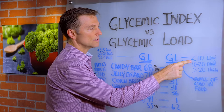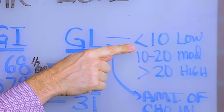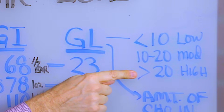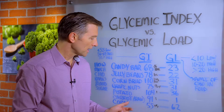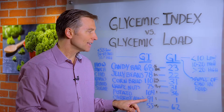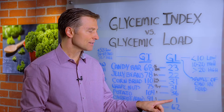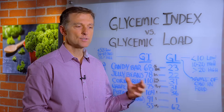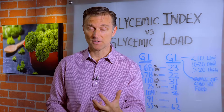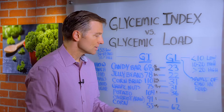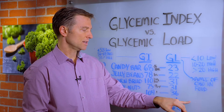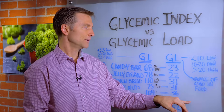The glycemic load scale: 10 or less is low, 10 to 20 is moderate, and greater than 20 is high. If you look at a raw carrot — 91 is pretty high on the glycemic index — but look at the glycemic load: it has a factor of one. What we're doing with the glycemic load is deducting all the fiber. It's very fibrous, so this is not going to influence your blood sugars nearly as much as most other foods.